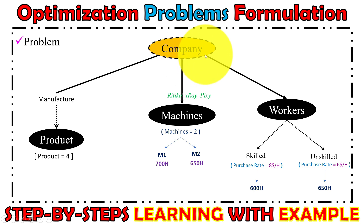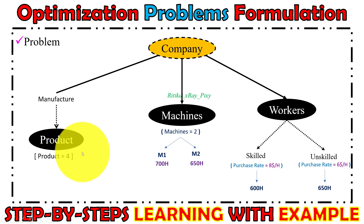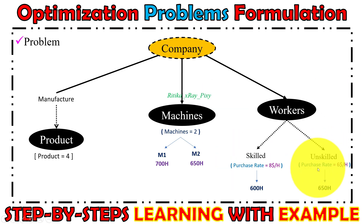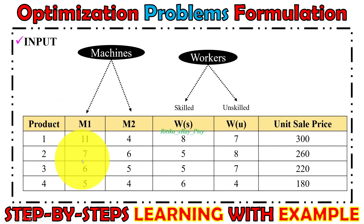The problem is to calculate how much each product should be produced each month and how much labor is required to purchase, so that the company will gain more profit. Company profit is defined as total revenue minus workers cost.